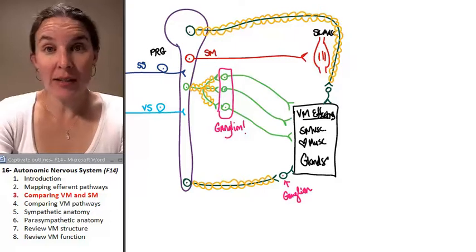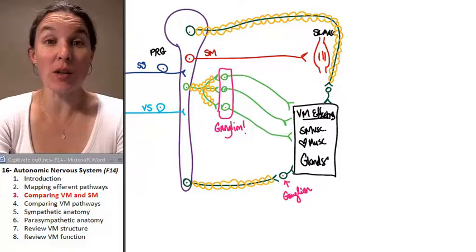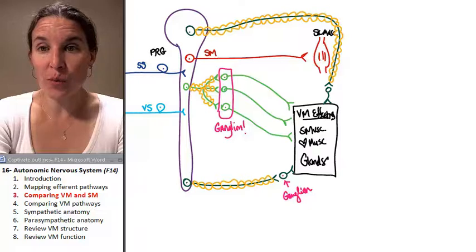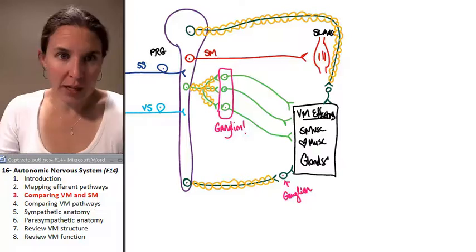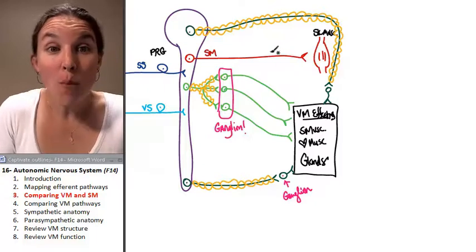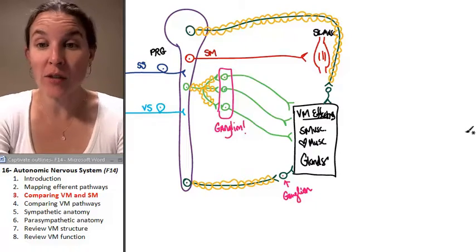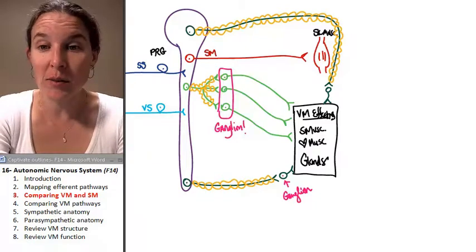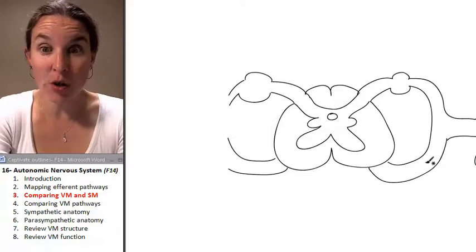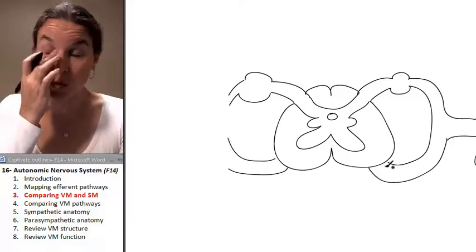So let's look at the anatomical characteristics that we use to distinguish between our motor pathways. This is the picture that we just drew, and we know if we're looking at this thing, what we know is that both of them, both somatic motor and visceral motor of both flavors, travel through the anterior gray horn and through the anterior root.